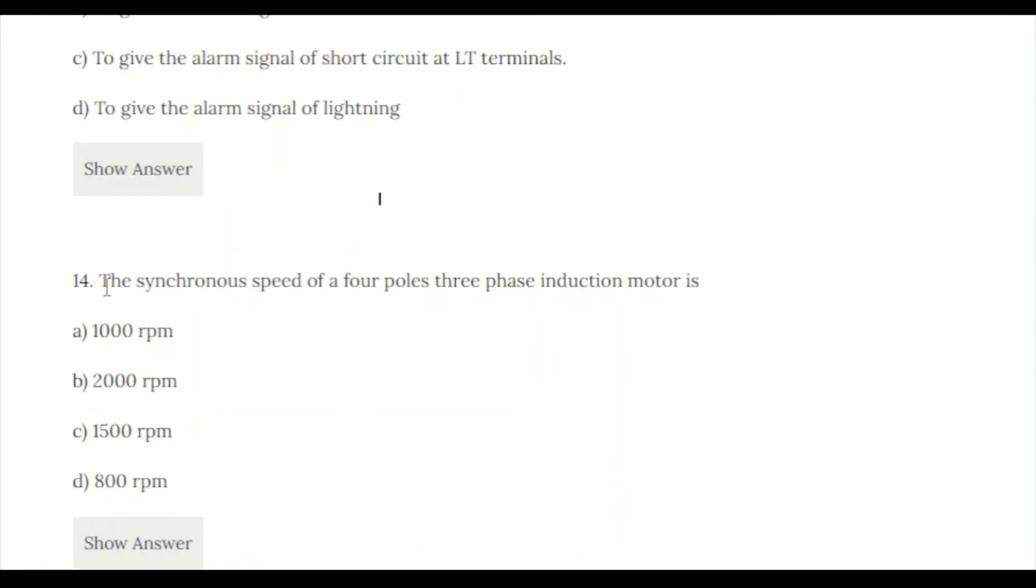Question 14: The synchronous speed of a 4-pole three-phase induction motor is: a) 1000 RPM, b) 2000 RPM, c) 1500 RPM, d) 800 RPM. Using the formula, synchronous speed equals 120F/P, where F is frequency (50Hz) and P is number of poles (4). The answer is 1500 RPM, option C.